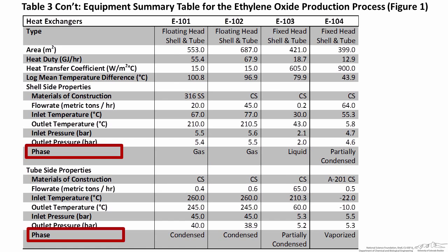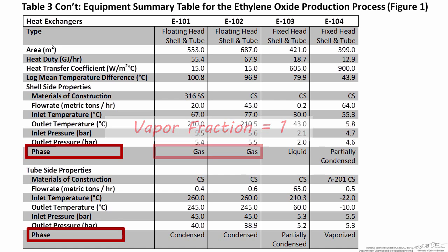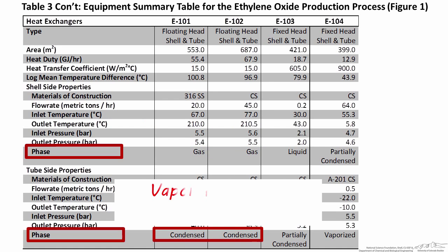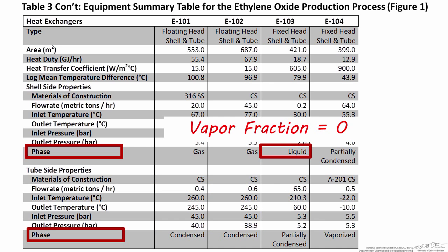For example, oxygen and ethylene gases have a vapor fraction of 1 both going in and coming out of the heat exchanger because they're both gases at this temperature and pressure, so they should both be designated as gas. High-pressure steam enters tube-side in both of these heat exchangers as a saturated vapor with vapor fraction 1, and by the time it exits the heat exchanger it's a condensed liquid, so these streams are designated as condensed. Cooling water enters and exits the shell-side of E103 as a liquid — it does not change phase, so it's designated as a liquid.